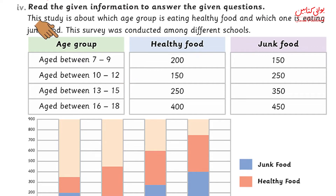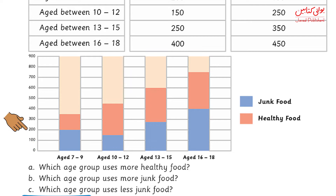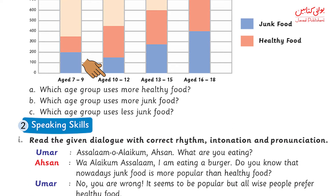You have the age group in one section, and healthy food and junk food in two areas which we place on the graph. The age is on the x-axis, that is below, and healthy food and junk food are on the y-axis on your left side. In the age group 7 to 9, 200 students eat healthy food and 150 people eat junk food.